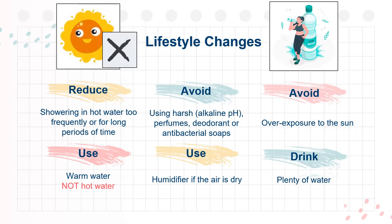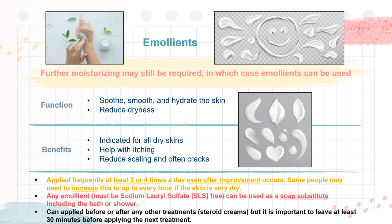Lifestyle changes. You can avoid having dry skin or reduce dryness by reducing showering in hot water too frequently or for a long period of time. Avoid using harsh alkaline pH, perfumes, deodorant, or antibacterial soaps. Avoid overexposure to the sun. Use warm water, not hot water. Use a humidifier if the air is dry. Lastly, drink plenty of water. These lifestyle changes may help to reduce the dryness of the skin, but further moisturizing may still be required, in which case emollients can be used.